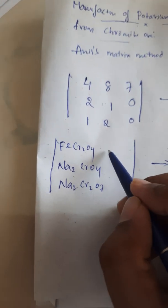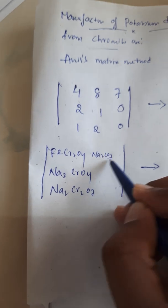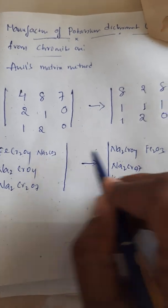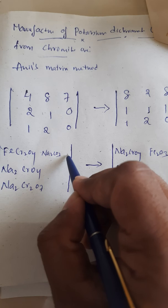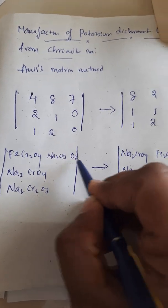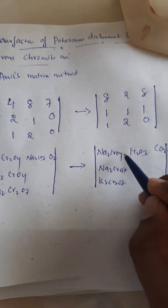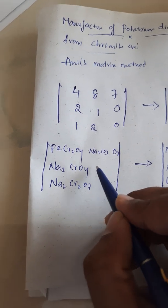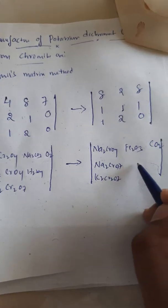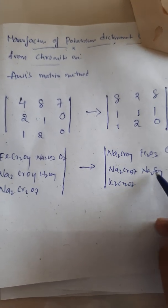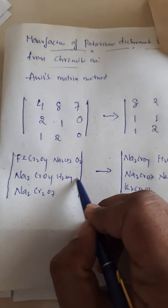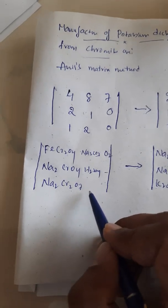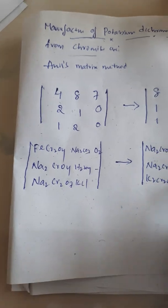The second element in the first row is Na₂CO₃, and in the second matrix it is Fe₂O₃. The third element in the first row is O₂, and in the second matrix it is CO₂. The second element in the second row is H₂SO₄, and in the second matrix it is Na₂SO₄. The second element in the third row is KCl, and in the second matrix it is NaCl.